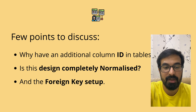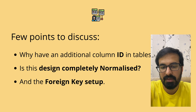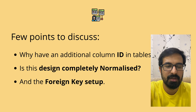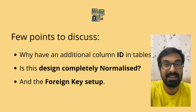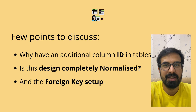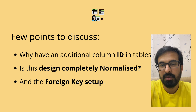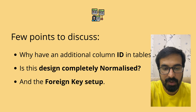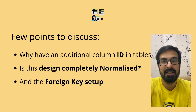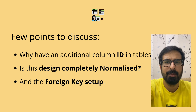There are three points to discuss about this design style: why we need auto-increment ID columns in each table, whether this design is completely normalized, and the foreign key setup. On the first point — you might wonder why not use a meaningful column as the primary key. The auto-increment ID is always unique since it is automatically generated by the database. It also makes indexing faster compared to complex string-based primary keys, and string-based primary keys slow down join queries. That said, if a meaningful column suits your application design, you can use that as the primary key.